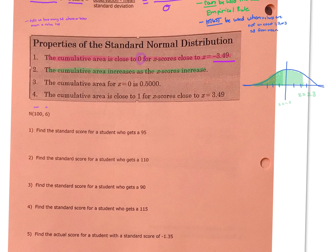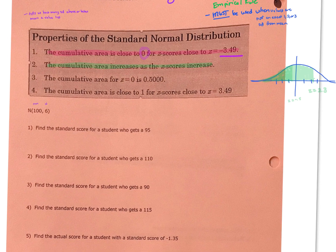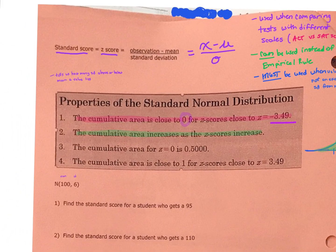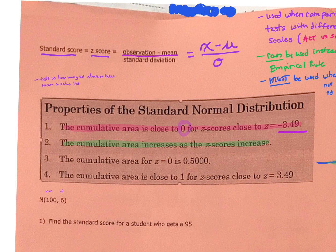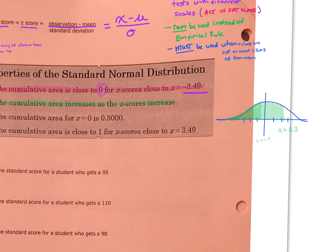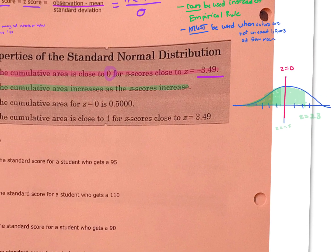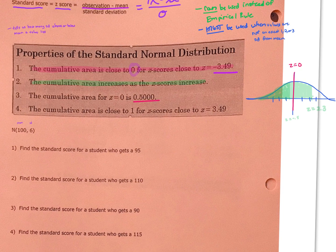The cumulative area for z equal to 0 is 0.5. If we have a standard score of 0, think about how we get that: we take the observation minus the mean and get 0, meaning the distance between the observation and the mean is 0 — in other words, the value is right at the mean. So our cumulative area from that point — from as low as possible up to our mean — is 50%, or 0.5 written as a decimal.